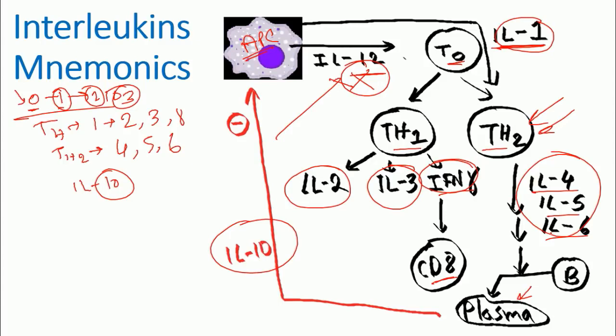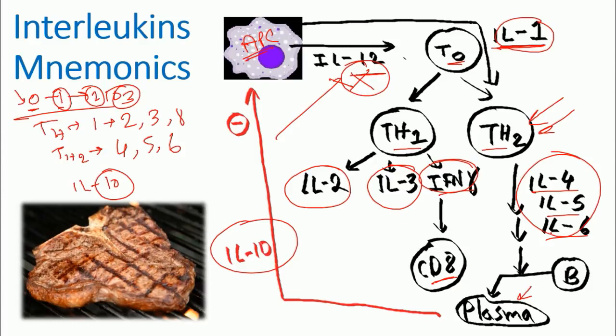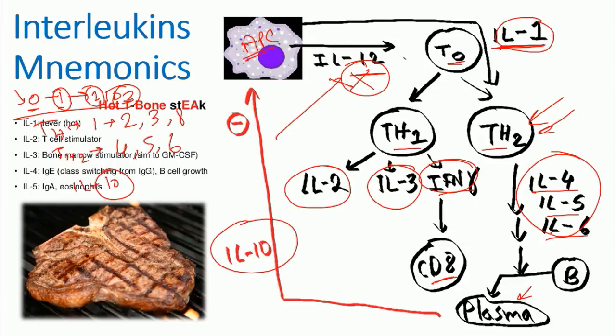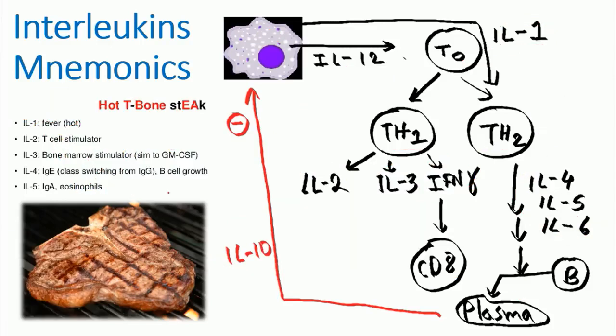Now how to remember the function of all those interleukins? You need to remember 'hot T-bone stick.' When you talk about hot T-bone stick, what we mean—let me erase all these things in here. Okay, so now if you look at here, hot T-bone stick: letters which are written in red are the ones that you need to follow. For example, 'hot'—interleukin-1. So it starts with interleukin-1, which is 'hot.' Hot means fever, so interleukin-1 causes fever. Then capital 'T' is the second interleukin, so the function of interleukin-2 is T cell stimulation. Then the third one, 'bone,' so interleukin-3: bone marrow stimulator. It stimulates the granulocyte-monocyte colony-stimulating factor and also granulocyte colony-stimulating factor.